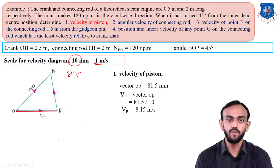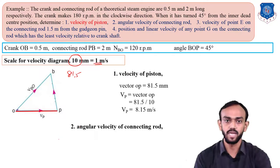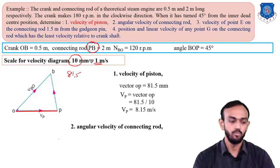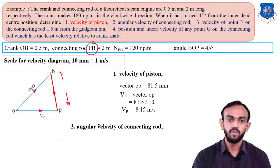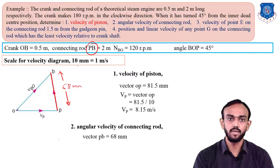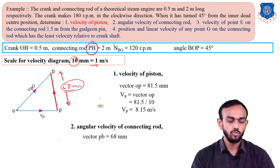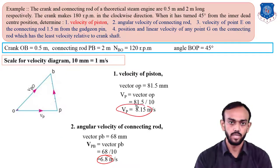The second point is to find the angular velocity of the connecting rod. The connecting rod is link PB. We measure the vector PB in the velocity diagram, which gives 68 mm. Using our scale of 10 mm equals 1 meter per second, we get 6.8 meter per second as the linear velocity of the connecting rod relative to B. This represents the velocity of P with respect to B.